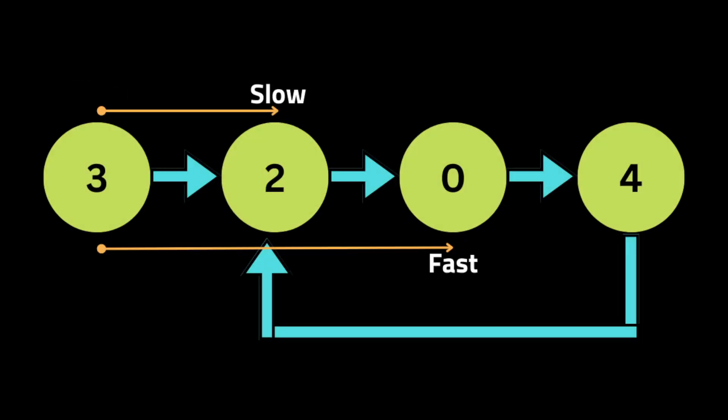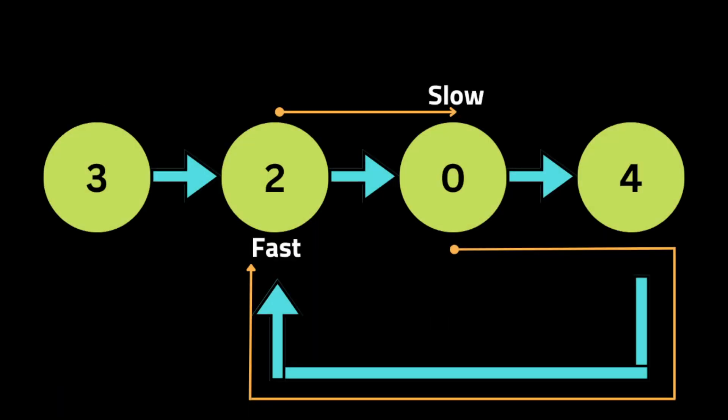We start moving the slow pointer to the next node — one step — and we move the fast pointer two nodes — two steps. Now the fast pointer is at the node with value 0 and the slow pointer is at the node with value 2. At this point, slow and fast are not pointing to the same node, so we continue.